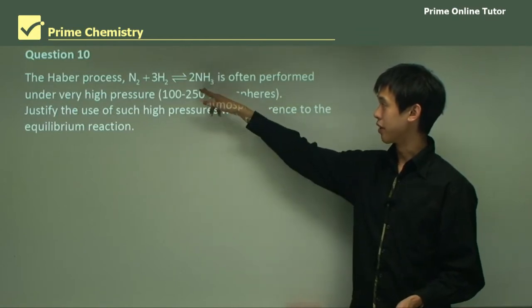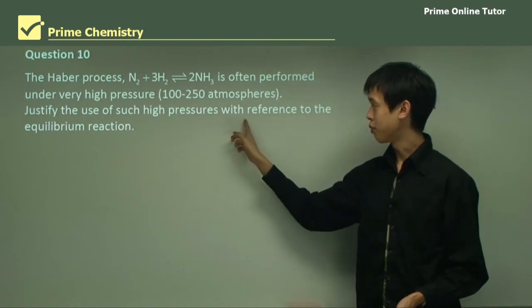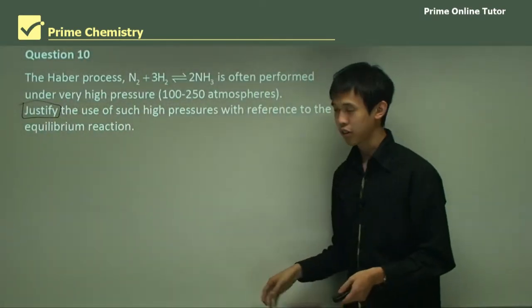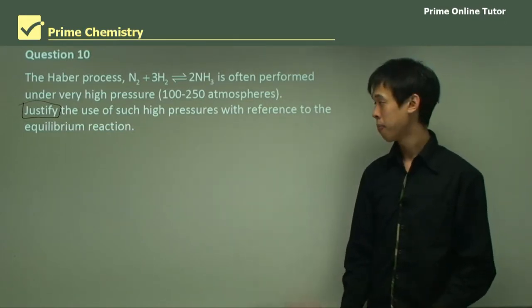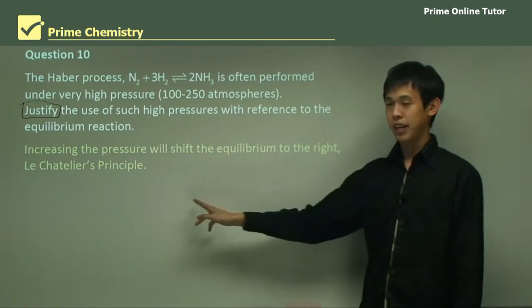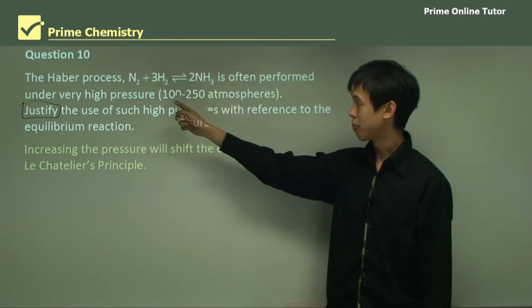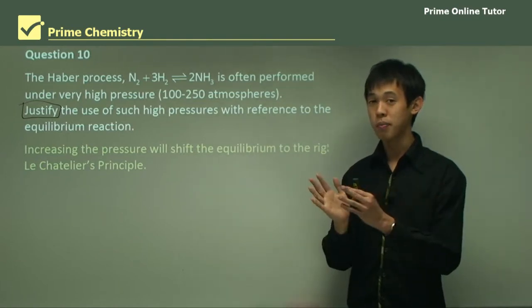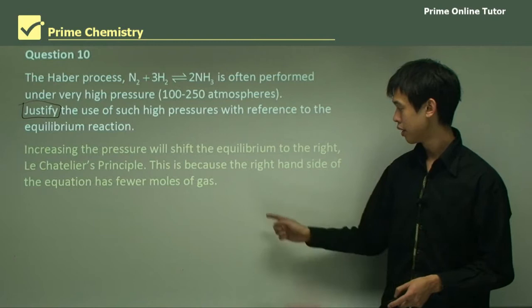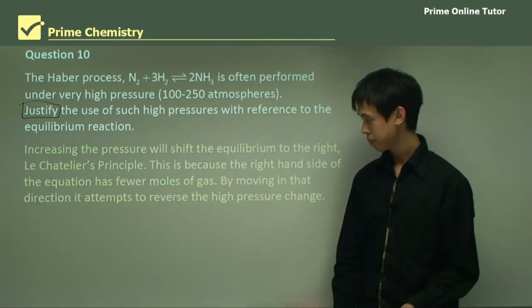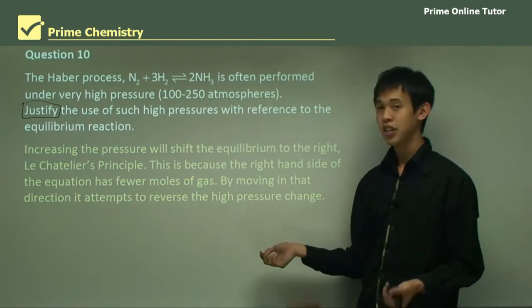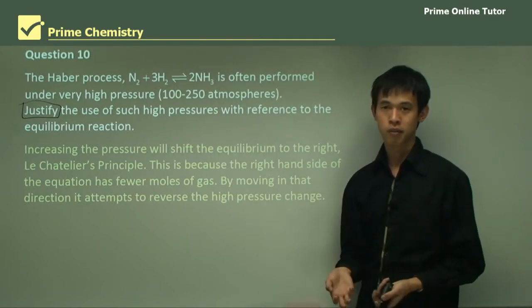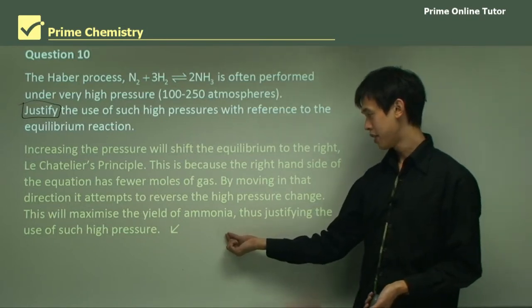Question 10: the Haber process is often performed under very high pressure — justify the use of high pressure with reference to the equilibrium reaction. Increasing the pressure will shift the equilibrium to the right by Le Chatelier's principle. There are four moles of gas on the reactant side but only two moles of gas on the product side. By increasing the pressure, we shift to the minimum number of moles — the right-hand side. By moving in that direction, the system attempts to reverse the high-pressure change, and this maximises the yield of ammonia, thus justifying the use of such high pressure.